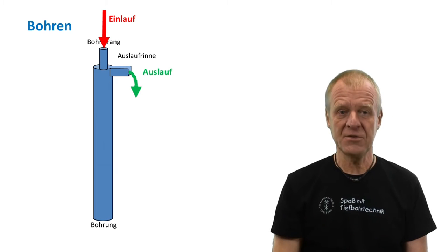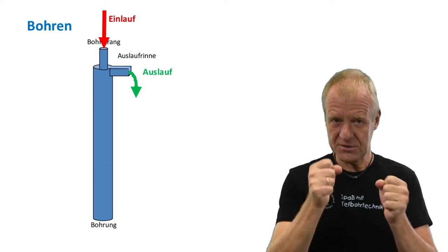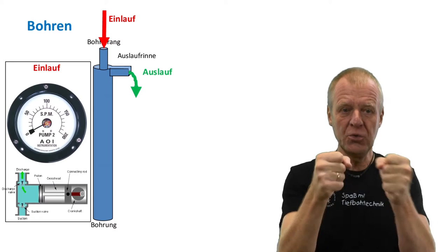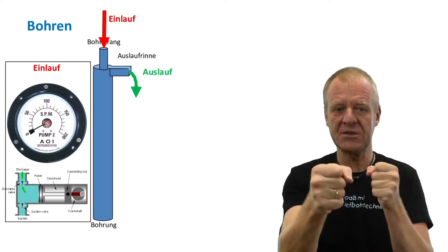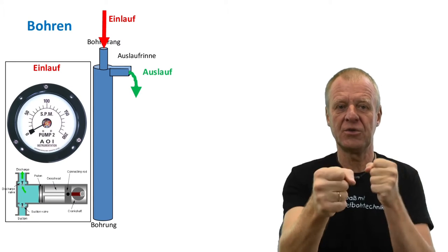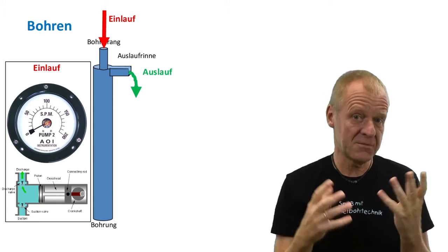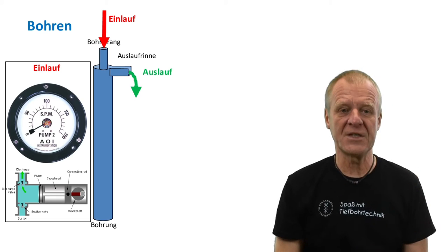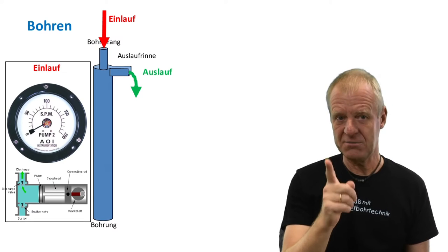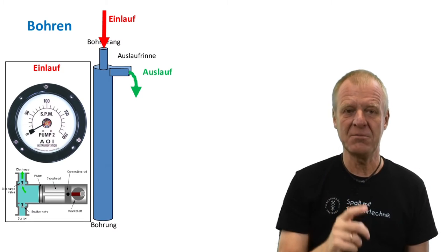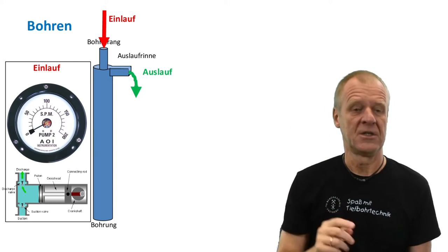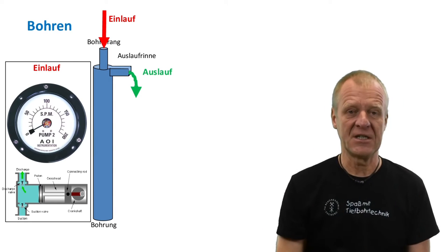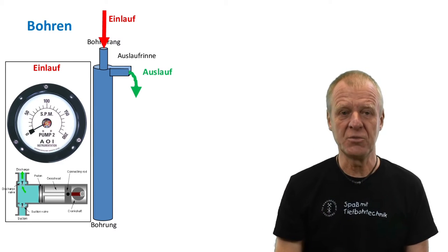We just count the number of pump strokes per minute and multiply it by the cylinder capacity of the pump. On the rig floor, it is indicated by an SPM display. SPM stands for strokes per minute of the pump, so the ingoing mud can easily be evaluated.